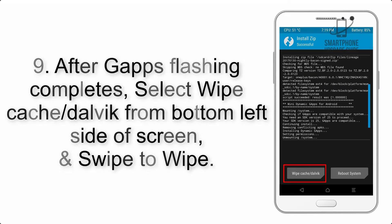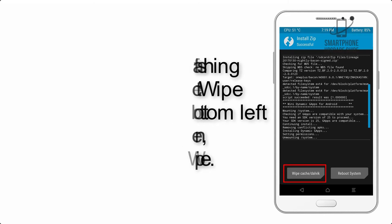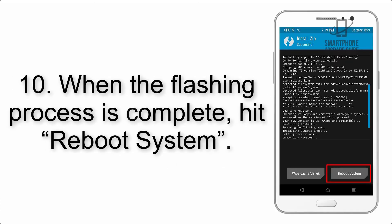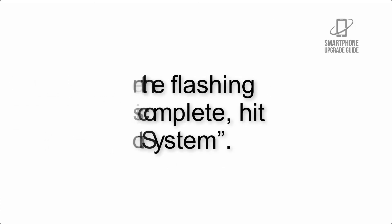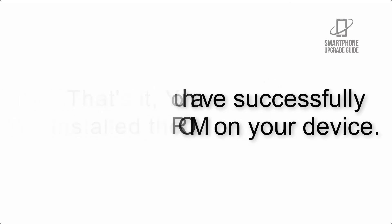Step 8: Flash the GApps zip package in the same manner. Step 9: After GApps flashing completes, select Wipe Cache and Dalvik from the bottom left side of the screen and swipe to wipe. Step 10: When the flashing process is complete, hit Reboot System. That's it — you have successfully installed the ROM on your device.